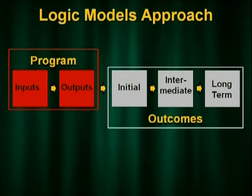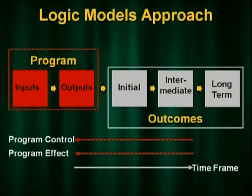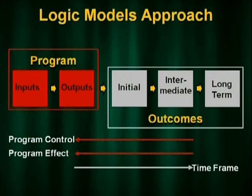The logic model gives us inputs — what the program resources are. Outputs are the activities that a program does. Then there are initial outcomes: those things that should immediately happen because of those activities. The intermediate outcomes follow, and then the long-term outcomes. The idea is not to focus only on that final outcome, but on the series of things that are supposed to happen because you did those activities. The initial outcomes are more in program control, while long-term ones are not — so you can see more clearly what the program was supposed to affect.